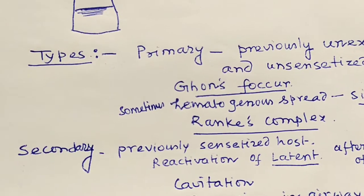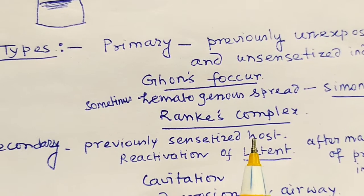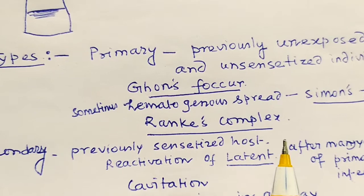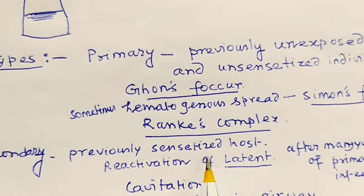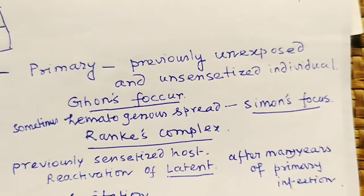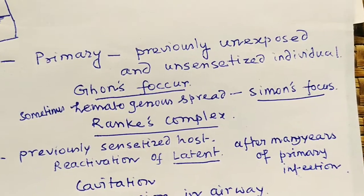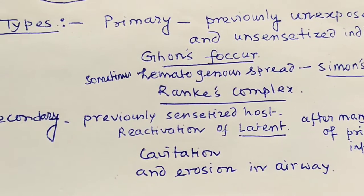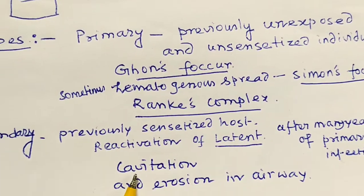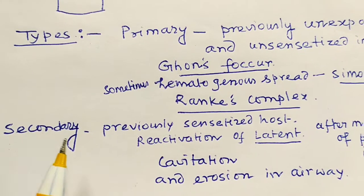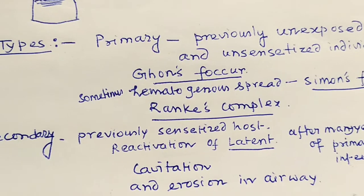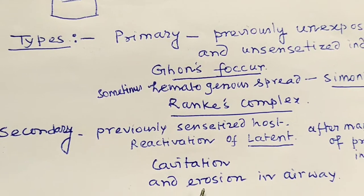Secondary TB occurs in a previously sensitized host — one in whom TB has already occurred. After a latent phase, the TB comes back. It occurs many years after the primary infection. A very important feature of secondary TB is cavitation — cavity formation — and erosion of the airway.